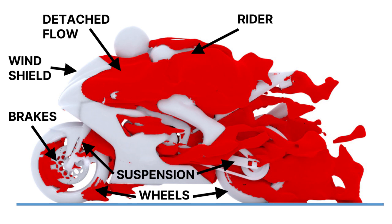Secondly, the path that the air needs to follow is hardly a smooth one, with for example the windshield abruptly stopping, causing the flow to detach. And last but not least, there's a huge rider sitting on top of the motorbike causing all kinds of disturbances to the airflow. So the drag coefficient of a motorbike is easily double or more than that of a modern day car.